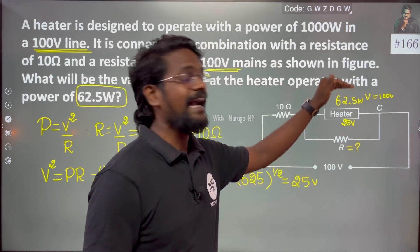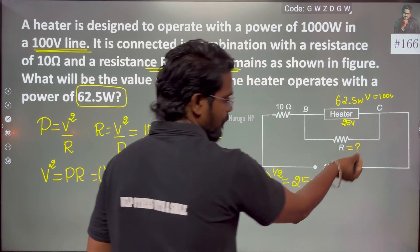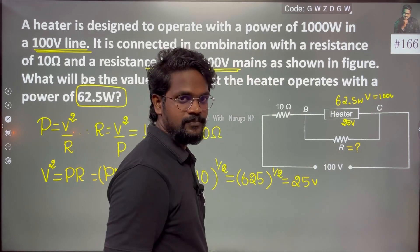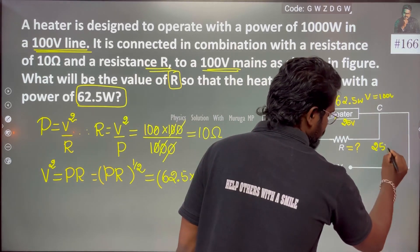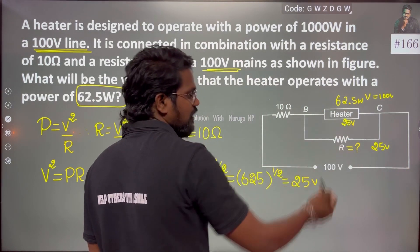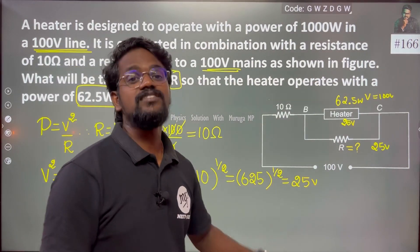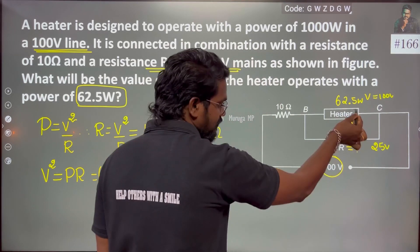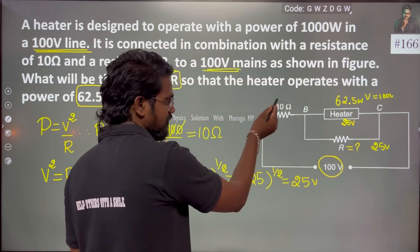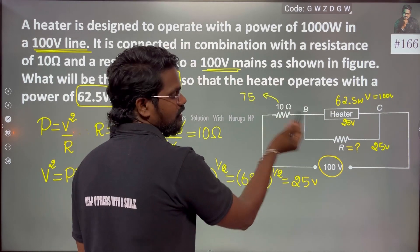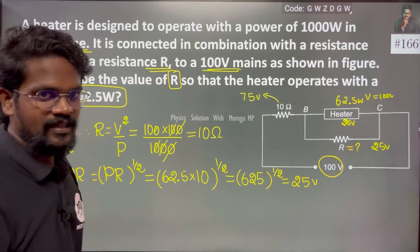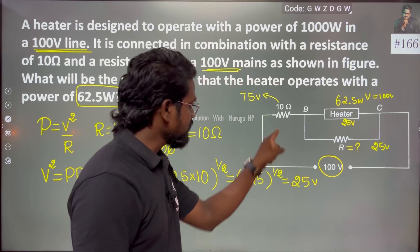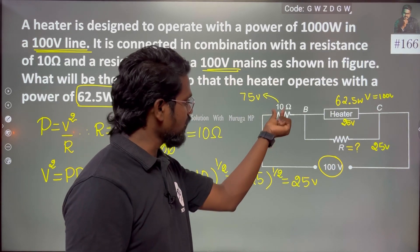Out of the 100 V supply, 25 V drops across the 10 Ohm series resistance, and 75 V is across the parallel combination of the heater and R. So voltage across the heater is 75 V and across the series resistor is 25 V.